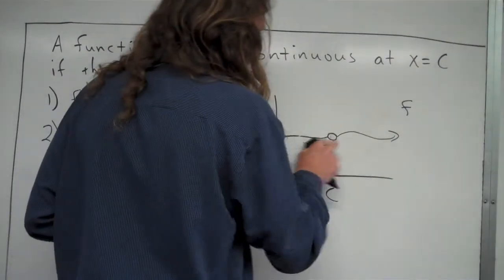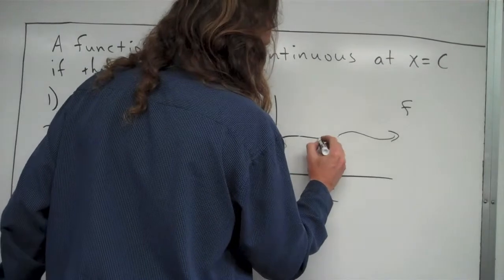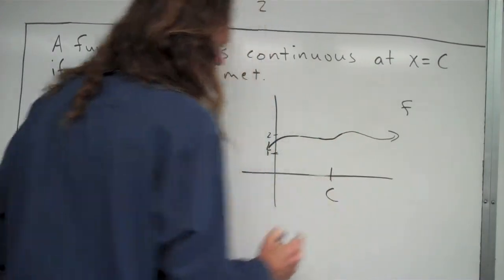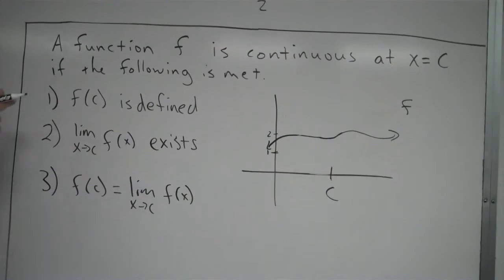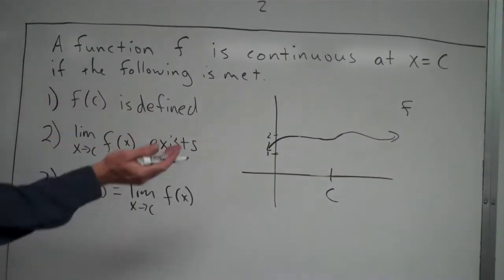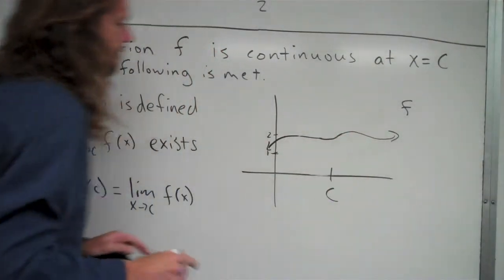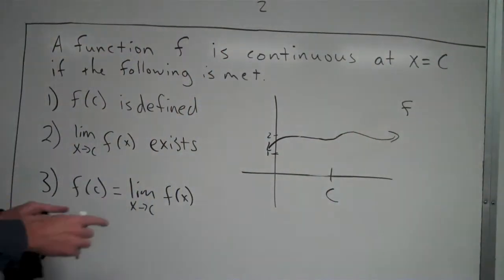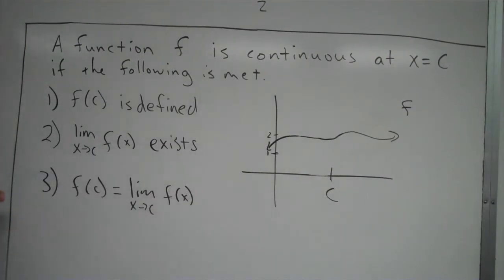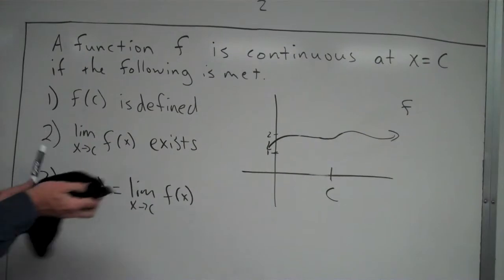If a function were continuous at x equals c, let's say I draw something straightforward like this. You can see f of c is defined — let's say it equals 2. The limit exists from the left and the right-hand side; the y values are both approaching 2, so the limit is 2. And f of c, which is 2, is equal to the limit, which is 2. So all three criteria are met.